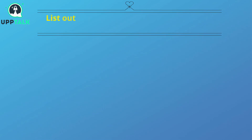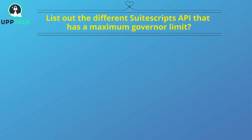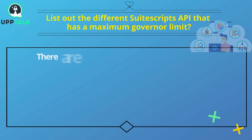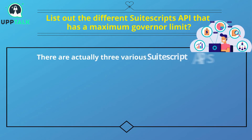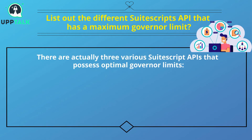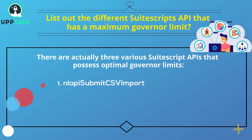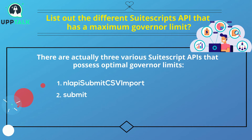List the different SuiteScript APIs that have a maximum governor limit. There are three SuiteScript APIs that have maximum governor limits: 1. nlapiSubmitCSVImport, 2. Submit, 3. nlapiSetRecoveryPoint.